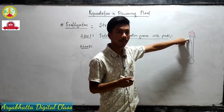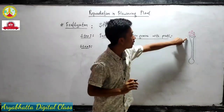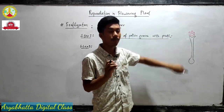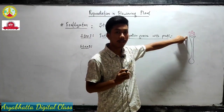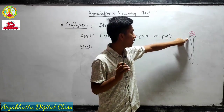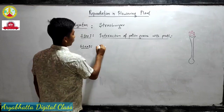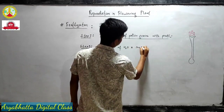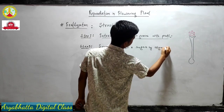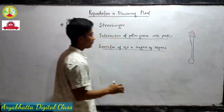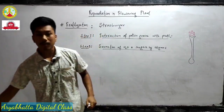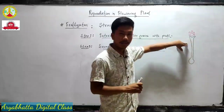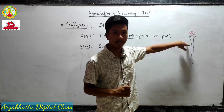Step two: secretion of water and sugar by the stigma. Once the stigma confirms that the pollen grains are of the correct type, the stigma secretes water and sugar. The pollen grains absorb that water and sugar to become slippery so that they can pass through and enter inside the body of the pistil.